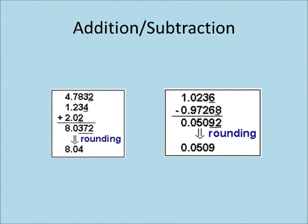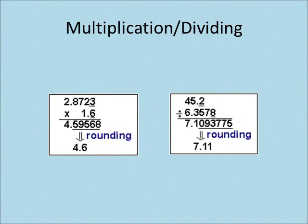When adding and subtracting numbers, the last digit retained is set by the first doubtful digit. In other words, the final answer must be rounded to the decimal place that corresponds to the least accurately known number. When multiplying and dividing numbers, the answer contains no more significant figures than the least accurately known number.